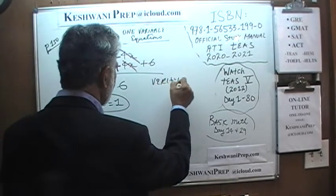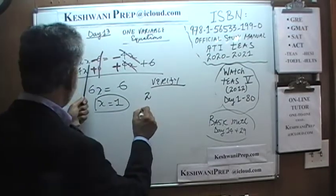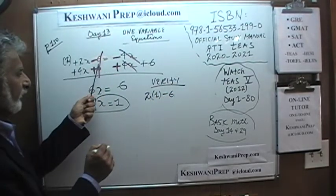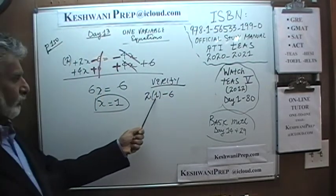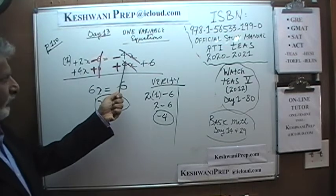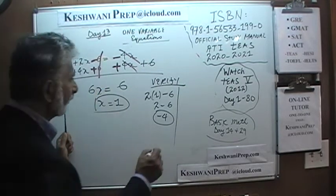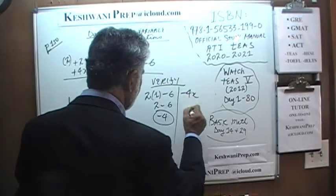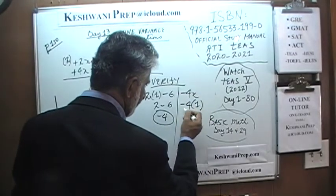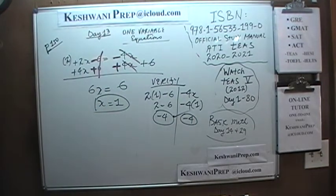Let's verify. The original equation was 2x minus 6 equals negative 4x. With x equal to 1: 2 times 1 minus 6 equals negative 4. On the right side, negative 4 times 1 is negative 4. It checks out. Number 3.